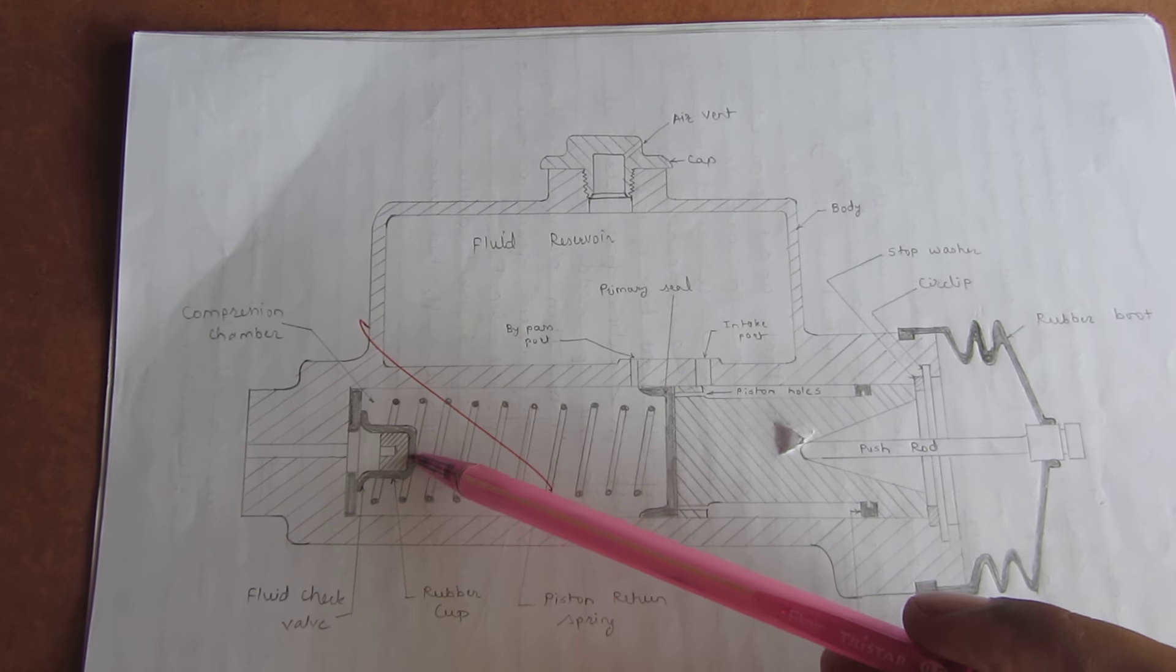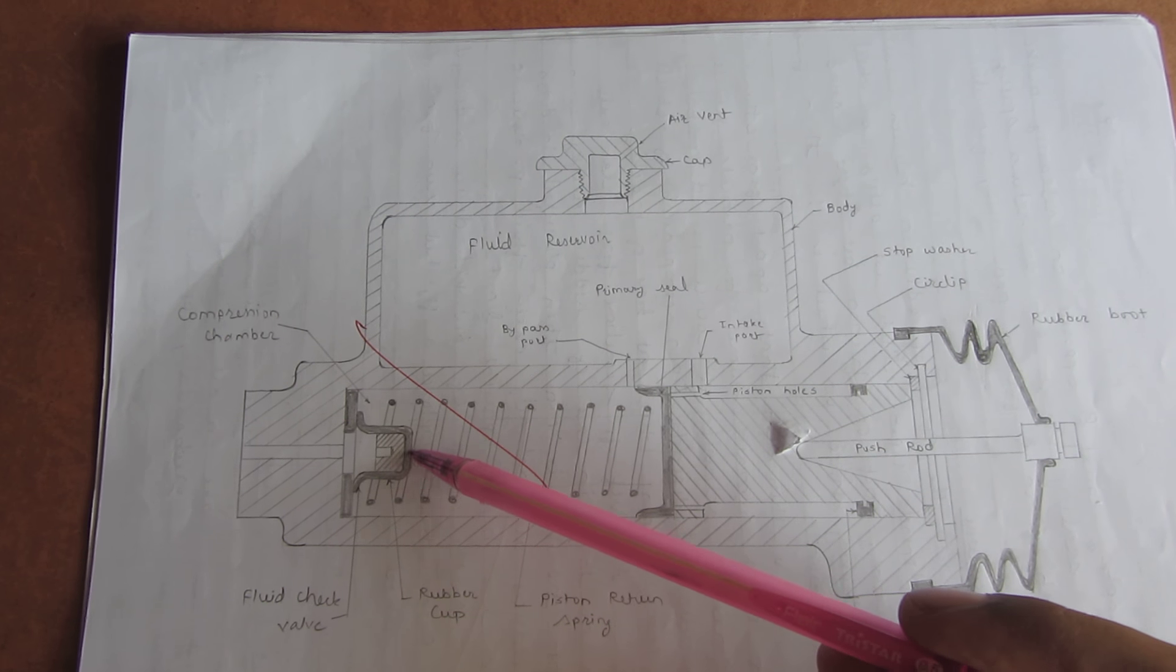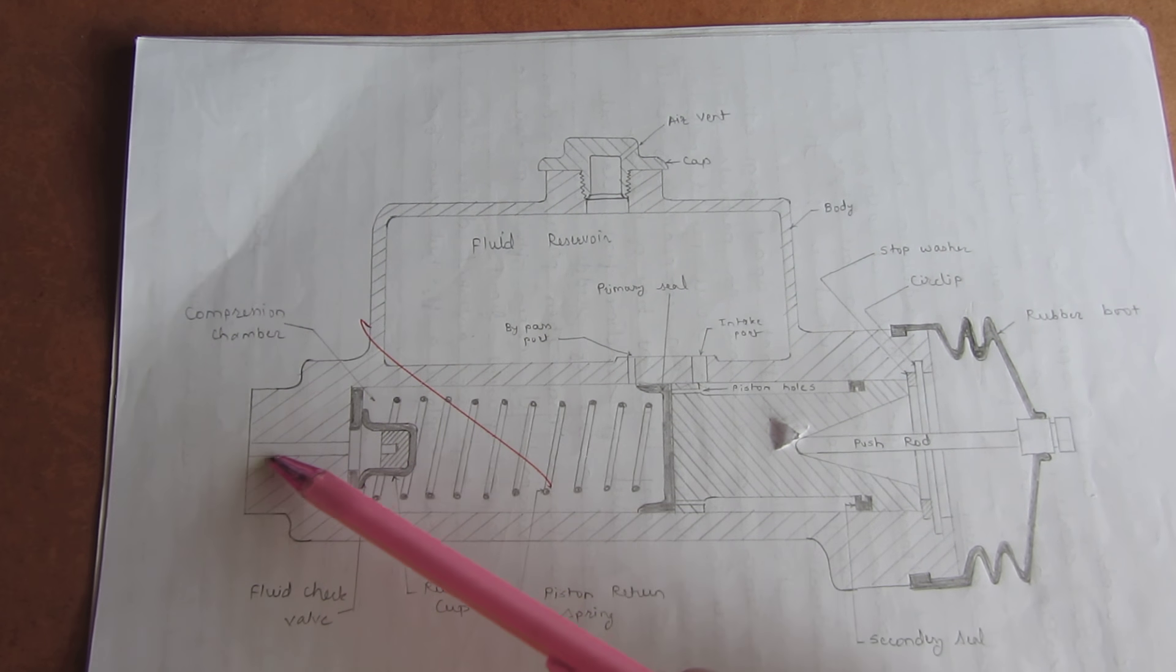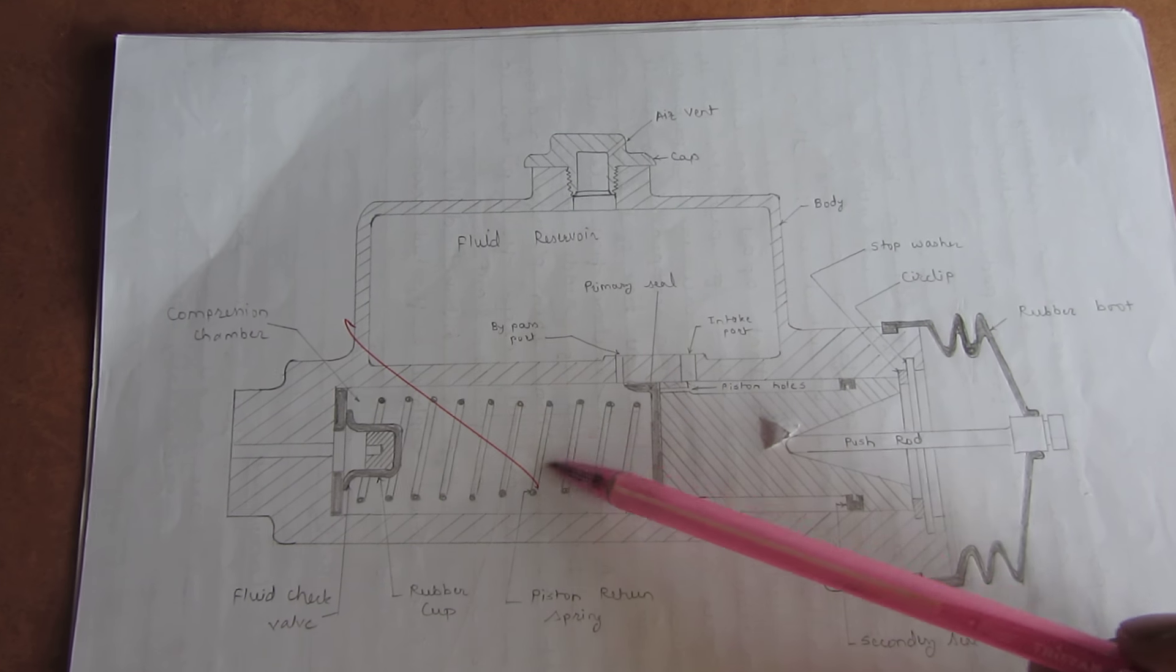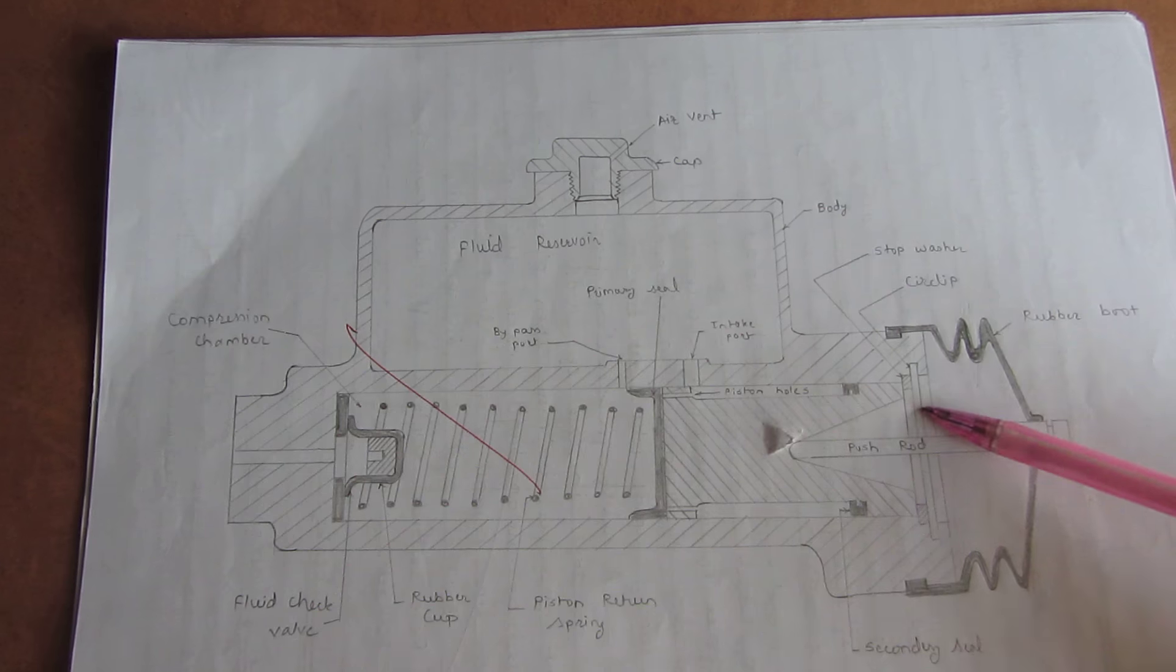At certain pressure, check valve opens and the fluid flows to the brake lining. When we release the pressure, due to the spring tension, the piston moves backward and the brake is released.